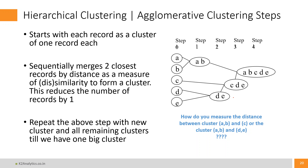Now 99 clusters are there. Once again you repeat the same step — compute distance between each other. All distances are available. The only thing is the two stores which got merged — you have to compute their distance with the remaining stores again. You find which distance is minimum; the two clusters with the minimum distance get merged. So you can see the agglomeration that is happening: you started with 100, after iteration one you had 99 clusters, then 98, then 97 — you keep going till you reach the top.